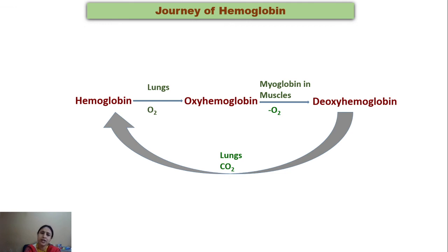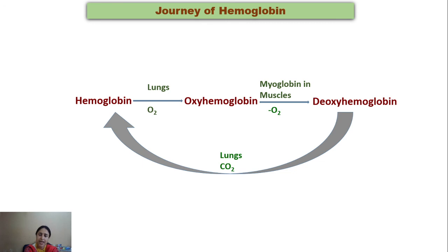In summary, hemoglobin — a metallobiomolecule — takes up oxygen from the lungs, becomes oxygenated, and carries oxygen to the muscles, where it releases oxygen to myoglobin for storage for different metabolic reactions. Deoxyhemoglobin then carries carbon dioxide from the muscle tissues through its amino acid residues and protein chain, returning to the lungs to release carbon dioxide. This is how hemoglobin carries out its journey in the living system.